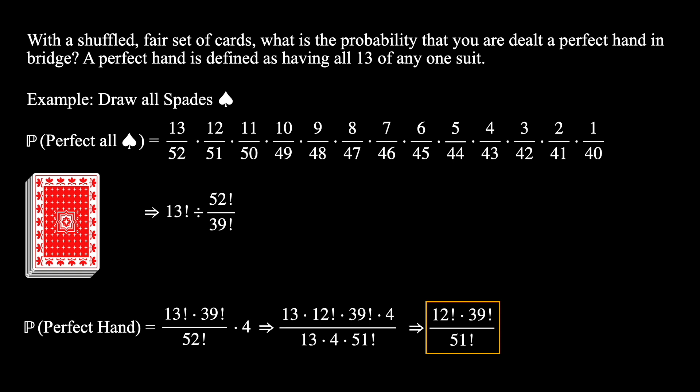Because this answer is in factorial form, it's a little hard to interpret what this truly means. Take a moment to try to guess how many games it takes for us to see one perfect hand. Alright, let's simplify it out for you. Just plugging this into a simple calculator like Wolfram Alpha, we find that we get a perfect hand of bridge about one every 10 billion deals. This is insanely infrequent, and it's almost impossible for anyone to get a perfect hand.